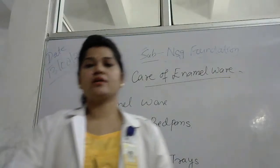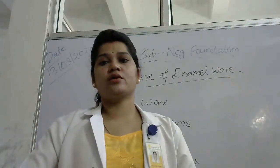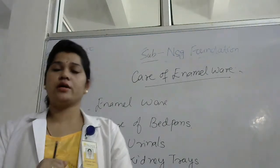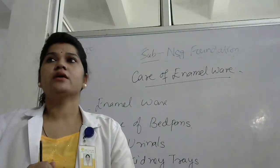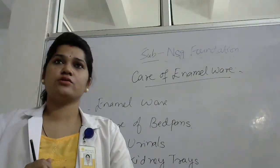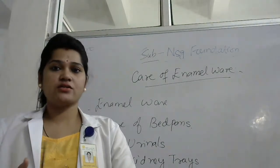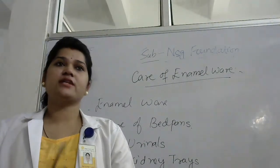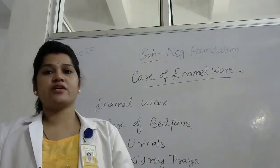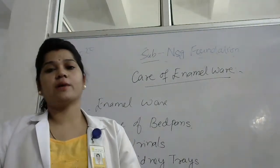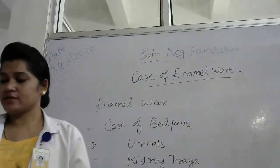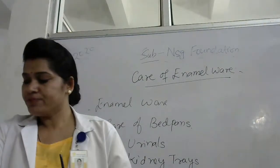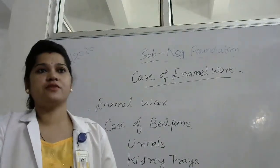Good morning class. Today's class is on animal wares — how to take care of the animal wares. Animal wares are nothing but articles used in hospitals which we use daily for patient purposes, like kidney trays, sputum cups, bed pans, urinals, kidney trays, sputum cups, peering cups, and different types of trays.